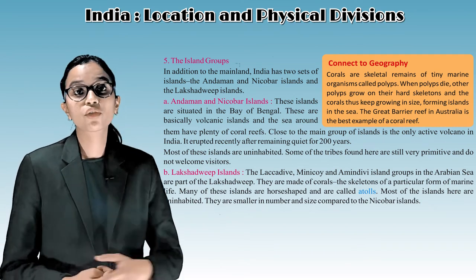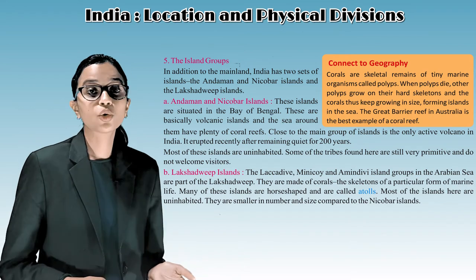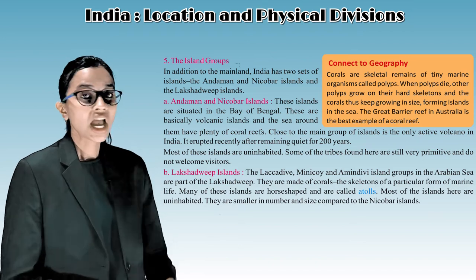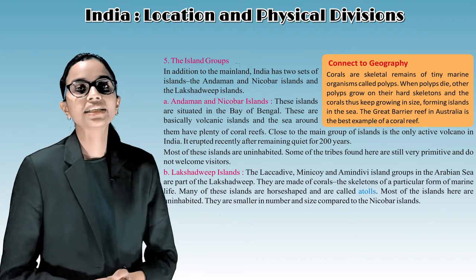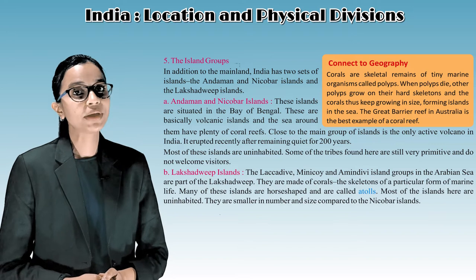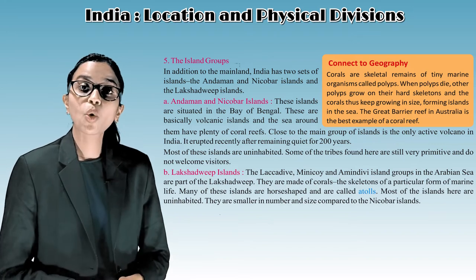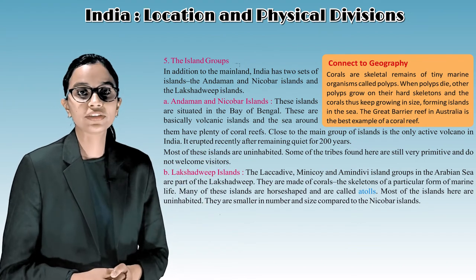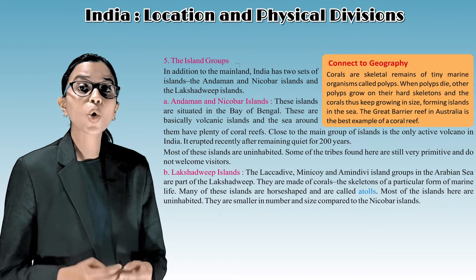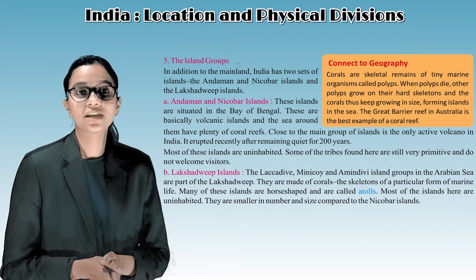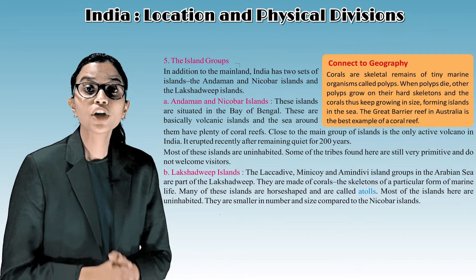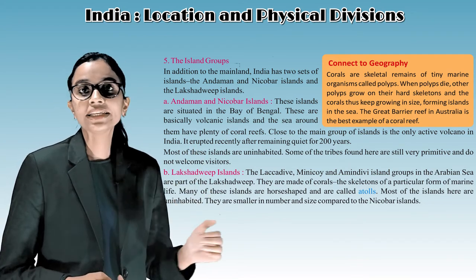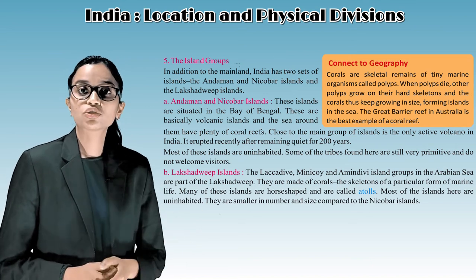In addition to the mainland, India has two sets of islands. The Andaman and Nicobar Islands are situated in the Bay of Bengal. These are basically volcanic islands and the sea around them has plenty of coral reefs. Close to the main group of islands is the only active volcano in India, which erupted recently after remaining quiet for 200 years. Most of these islands are uninhabited.